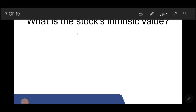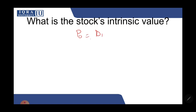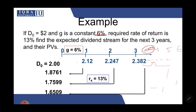The formula is: P0 = D1 divided by (Rs minus g). When finding the current stock price, always use D1 — the next year's dividend. D0 has already been received, so if you are purchasing the stock now, the next dividend you'll receive is D1, which was 2.12.